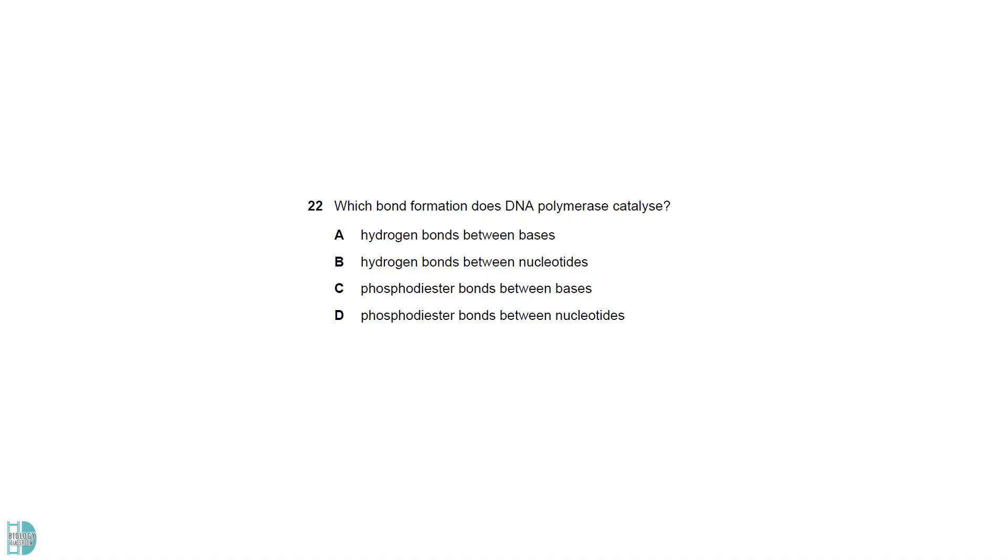DNA polymerase catalyzes the formation of phosphodiester bonds between nucleotides. A is correct about the bonds between the complementary base pairs, but its formation does not require DNA polymerase. B and C incorrectly match the bonds and their locations.